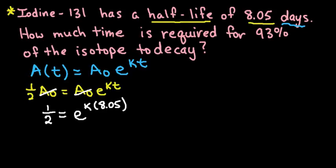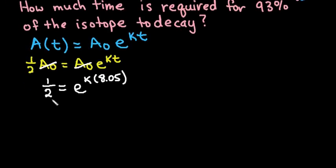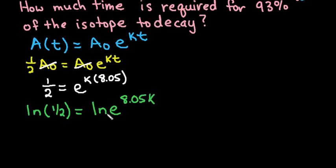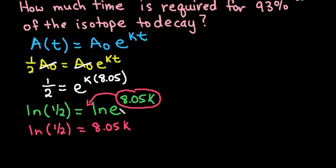What we need to do is take the logarithm of both sides since I can't rewrite this to be the same base. So I would take natural log of 1/2 and set it equal to the natural log of e to the 8.05k. This exponent can be written out in front using our rules of logarithms. So we have natural log(1/2) equals 8.05k. And remember that natural log e is just 1 because e to the first power equals e. So this essentially just cancels out.